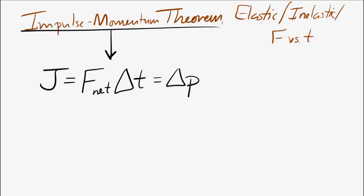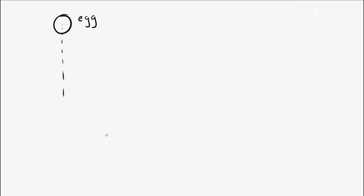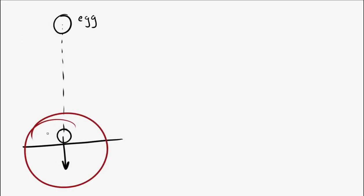We've already seen that impulse equals net force times the time the force is applied, and the definition of impulse is the change in momentum. Let's think about this in terms of a specific situation: dropping an egg that's going to hit the ground, and you want the egg to survive. The critical moment is when it hits the ground.